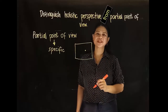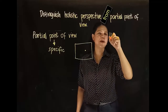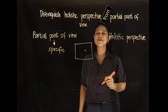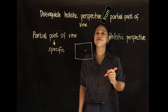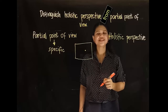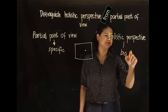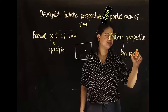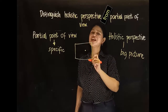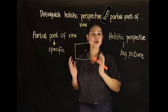If your answer is response B, then we are talking about the holistic perspective. Holistic perspective refers to a view that considers large-scale patterns in a system — it's like looking at the big picture. So in this image, you're not just looking at the dot, but you're looking at the whole image, the whole picture.